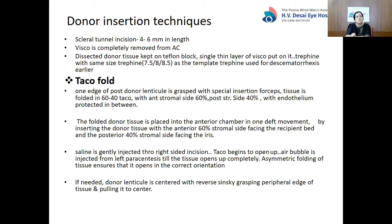The initial technique for donor insertion is called the taco fold. One edge of the posterior donor lenticule is grasped with special insertion forceps. Tissue is folded in a 60-40 taco fold with the anterior stromal side at 60% and posterior stromal side at 40%, with the endothelium protected in between. The folded tissue is inserted into the AC in one swift movement with the anterior 60% stromal side facing the recipient bed and the posterior taco facing the iris. Saline is gently injected so the taco begins to open, then an air bubble is injected until the tissue opens up completely.